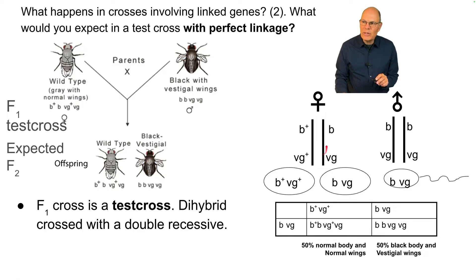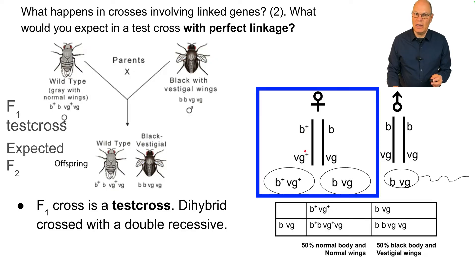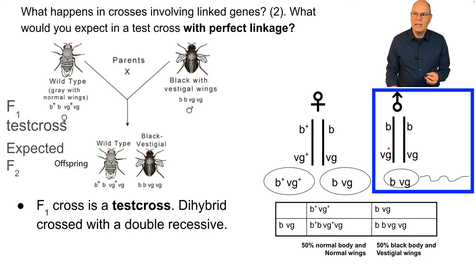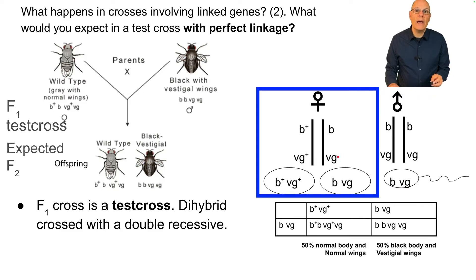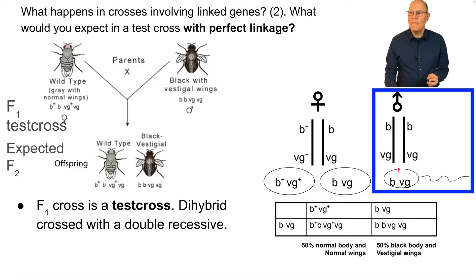Here's a representation of the female: on one chromosome she has B+ and VG+, and on the other chromosome she has B and VG. The male is a double mutant and has B and VG on both chromosomes. When the female produces gametes, assuming perfect linkage, half of her gametes will have B+ and VG+, and half will have B and VG. All of the male's sperm have B and VG.